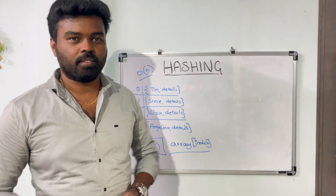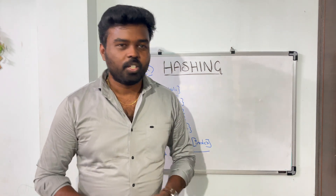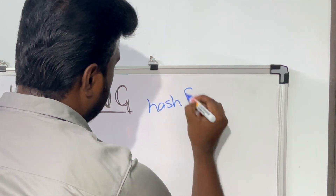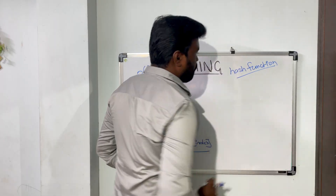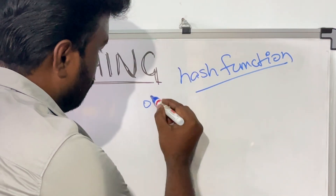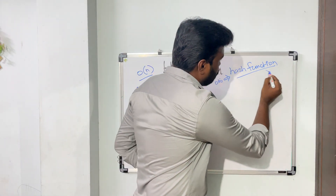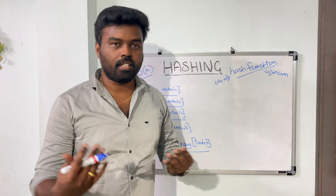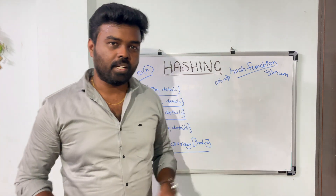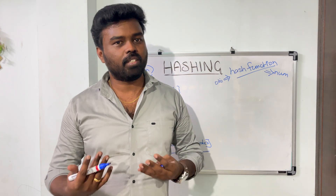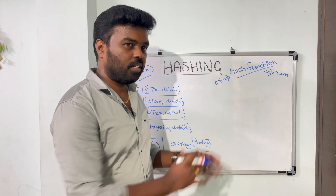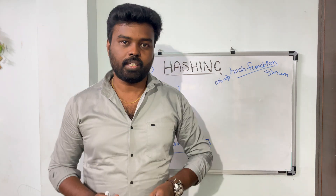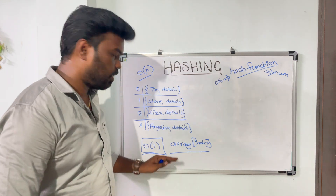This is where hashing comes into picture. How do we relate the employee name with the array index? The primary component of hashing is the hash function. A hash function accepts some object as an input and produces a numerical output as a result. Some advanced hash functions can even produce non-numerical hash codes, but for our explanation we will pass a simple object into the hash function and it will produce a numerical hash code. If that is possible, then we can definitely achieve O(1).